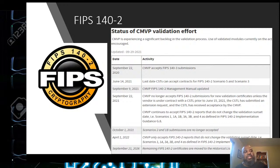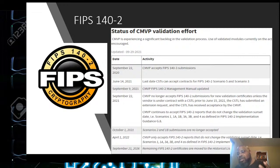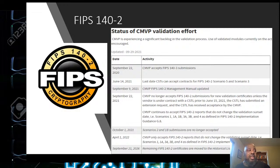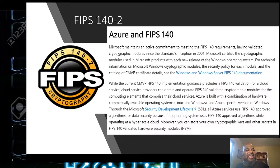AWS has the CMVP validation status. It notes that October 1st, 2022 is when FIPS 140-2 started rolling off and the new FIPS 140-3 is rolling in. Long story short, FIPS is about the government reviewing a software package and certifying that the encryption is implemented properly at the highest level.